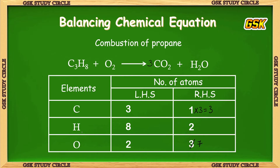Now try to balance hydrogens. The number of hydrogens on LHS is 8 and on RHS is 2. If we multiply H2O by 4, the number of hydrogens becomes 8. But multiplying by 4 also changes the number of oxygens on RHS.